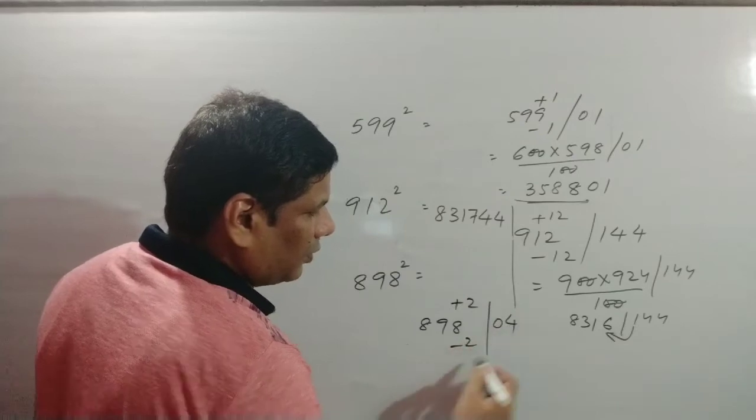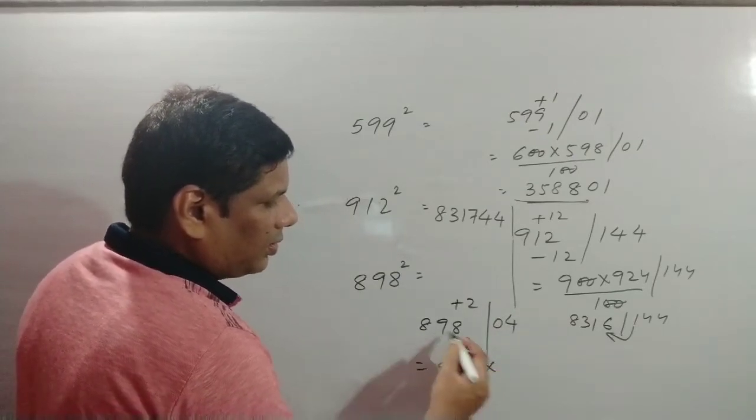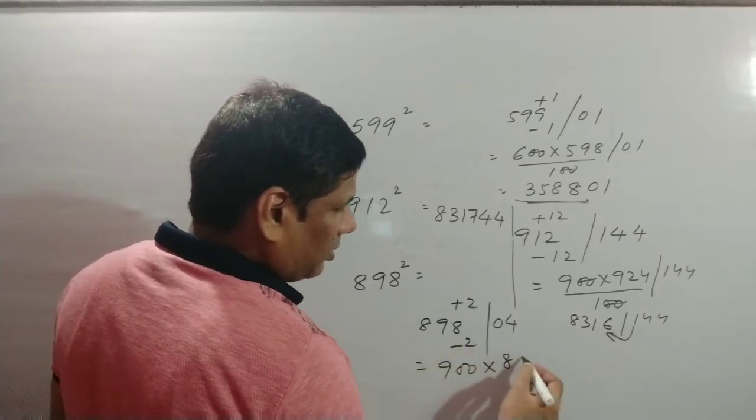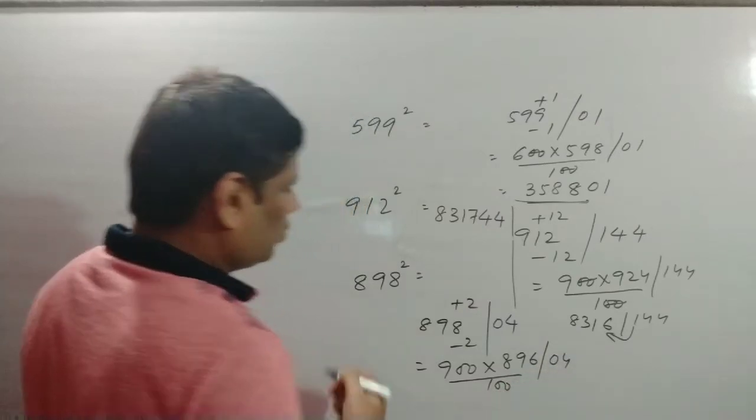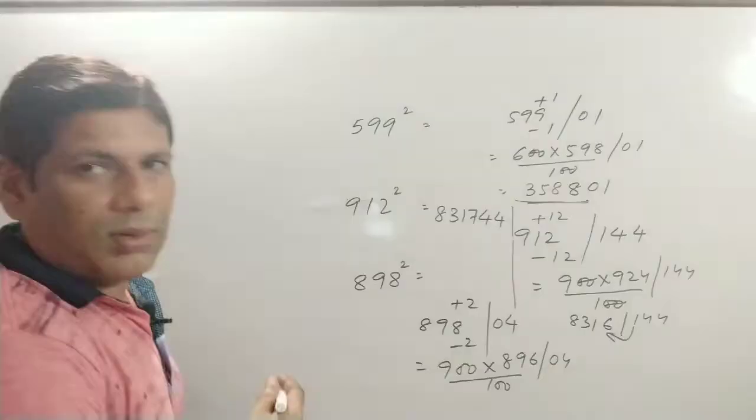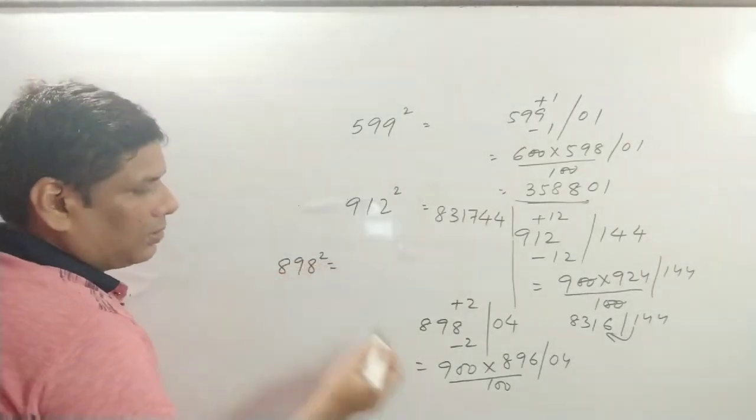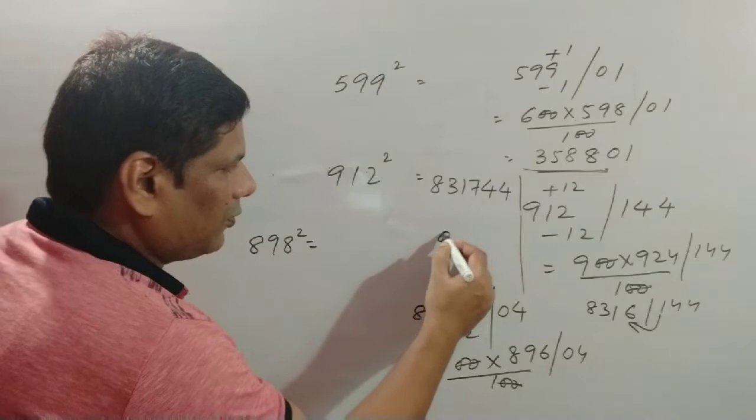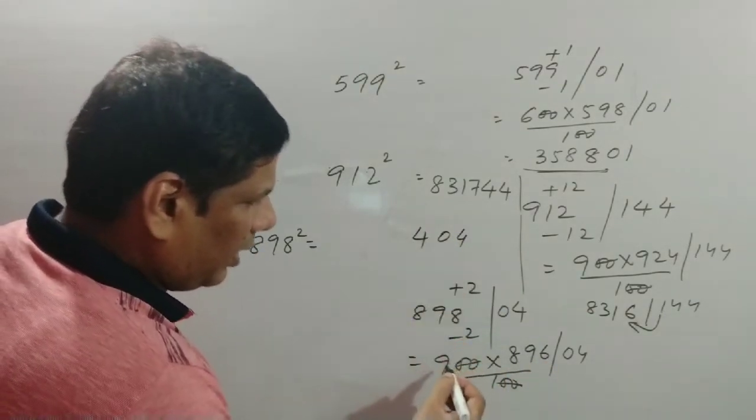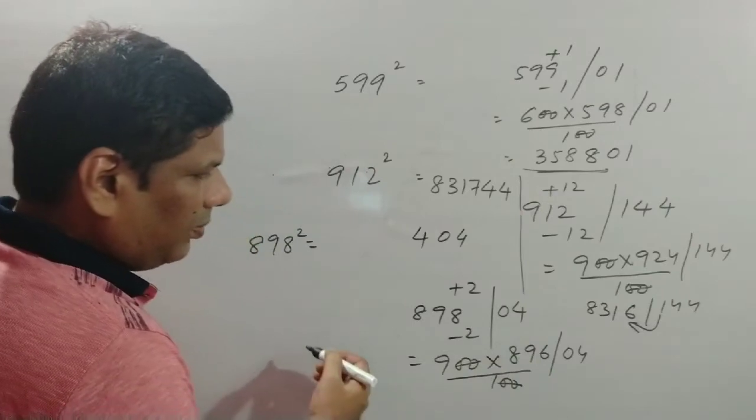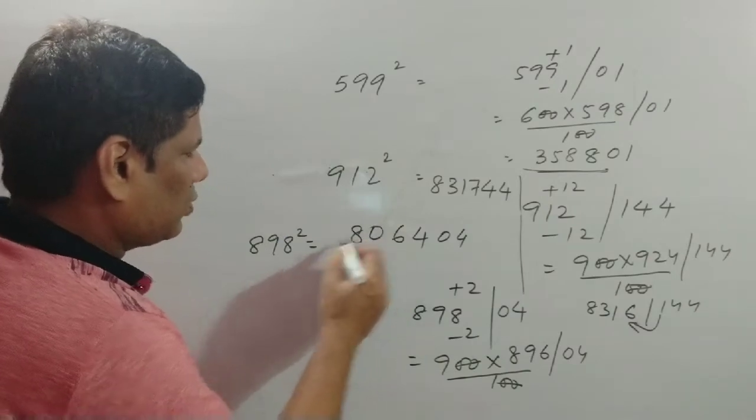The result of 898 squared: write 04, then 9 times 6 is 54 carry 5, 9 times 9 is 81 plus 5 is 86, 8 times 9 is 72 plus 8 is 80. So the square of 898 is 806,404.